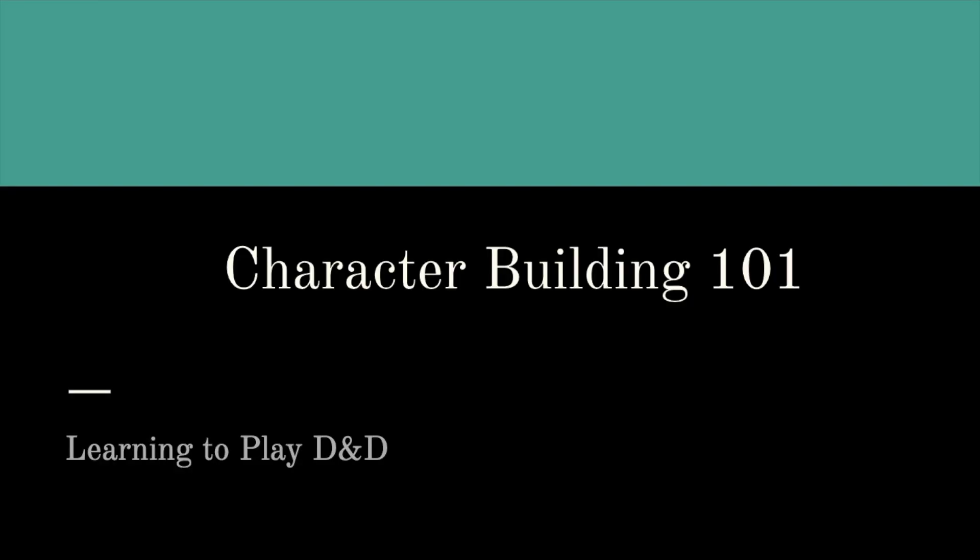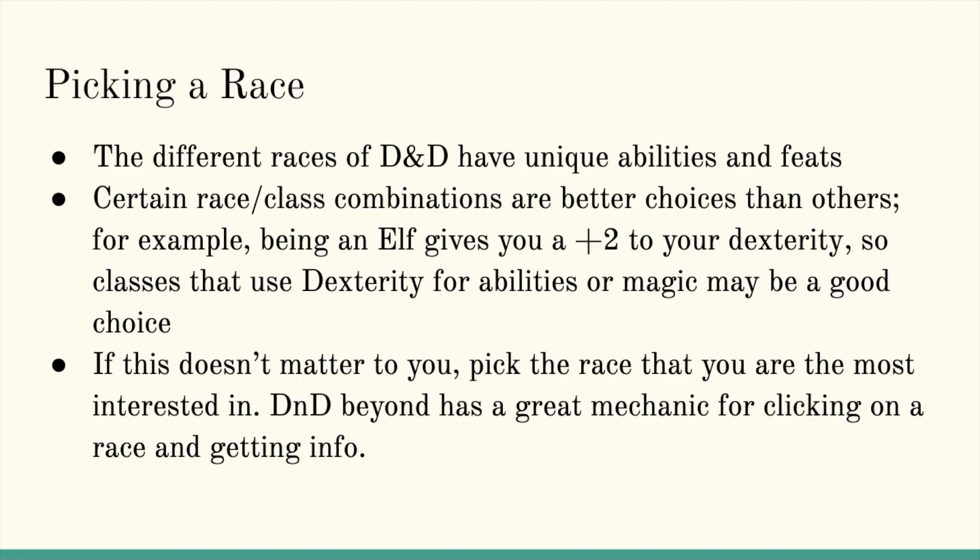Character Building 101: Learning to Play D&D. First, picking a race. The different races of D&D have unique abilities and feats. Certain race and class combinations are better choices than others. For example, being an elf gives you a plus two to your dexterity, so classes that use dexterity for abilities or magic may be a good choice. If this doesn't matter to you, then pick the race that you are the most interested in.